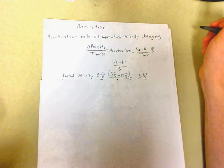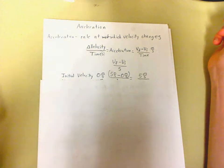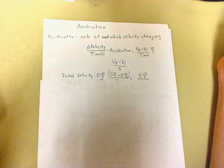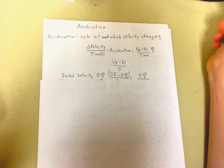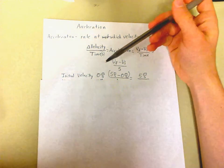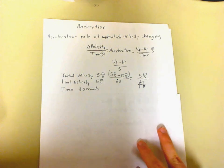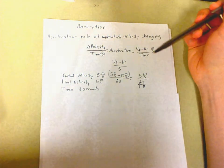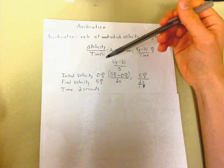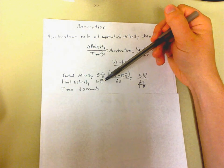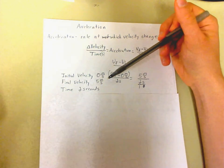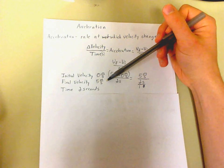All right, so now we come to an example problem of somebody that's going out for a walk. Their initial velocity is 0 meters per second. I'll just bring this down a little bit more. So their initial velocity is 0 meters per second. Their final velocity is 5 meters per second. And they have this change in velocity in 2 seconds.